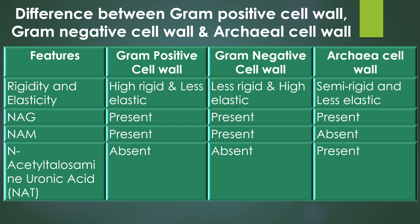NAG (N-acetyl glucosamine) is present in all three: gram-positive, gram-negative, and archaea cell walls. NAAM (N-acetyl muramic acid) is present in gram-positive and gram-negative cell walls but absent in archaea cell wall. NAT (N-acetyl talosamine uronic acid) is present only in the archaea cell wall and absent in gram-positive and gram-negative cell walls.